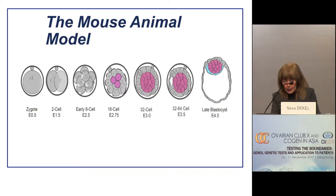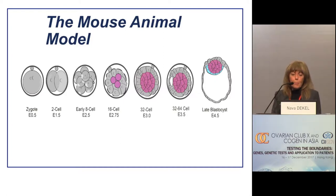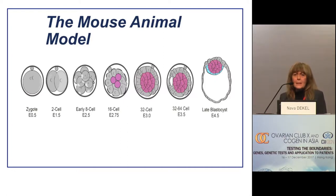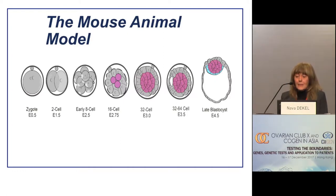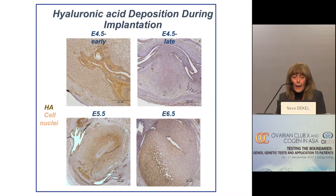On day 4.5 the late blastocyst is formed. Pregnancy in mice lasts 21 days; in humans it lasts approximately 40 weeks. Notably, the time it takes the embryo to go through early embryonic development and reach the blastocyst stage and implantation is very similar between mouse and human.